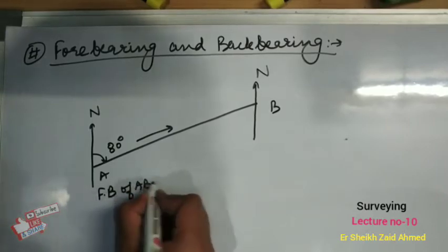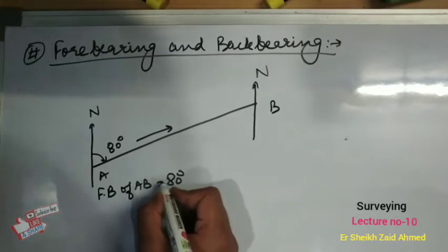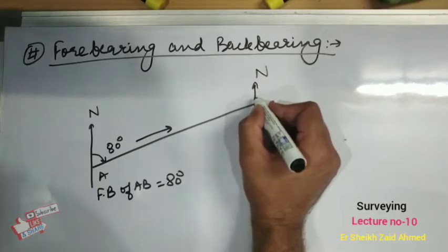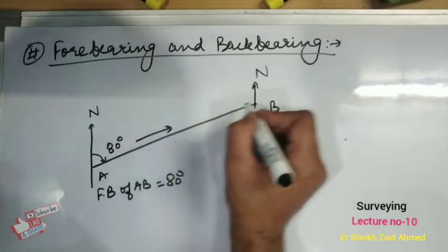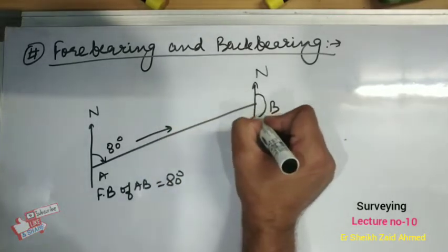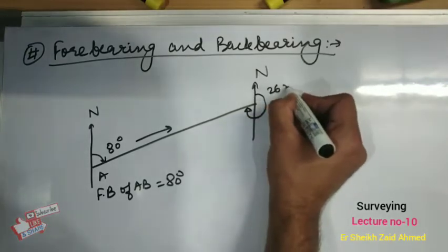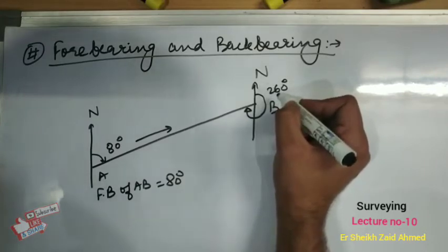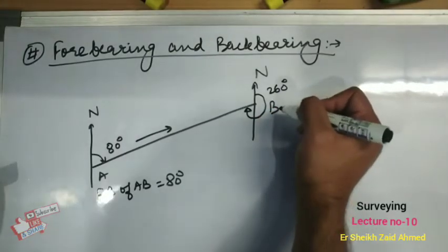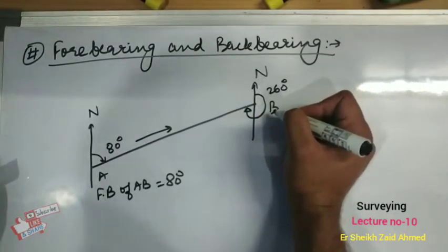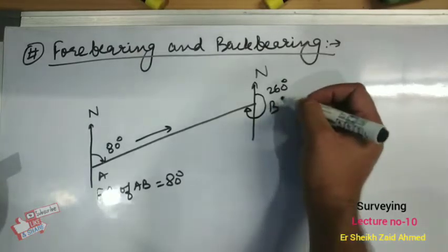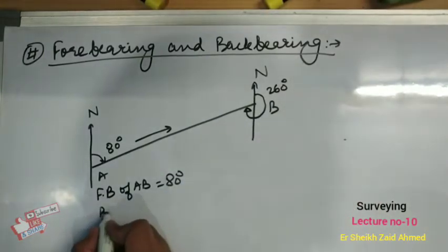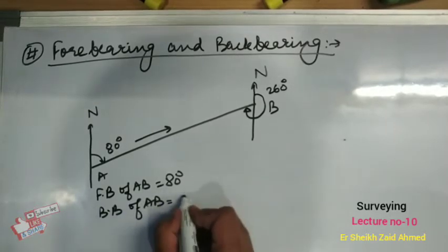The forebearing of AB is written as 80 degrees. The bearing in the direction opposite to the arrow will be 260 degrees, and this will be the backbearing. So in this case, backbearing is 260 degrees. To avoid confusion, an arrow should be marked to indicate the direction of progress of the survey.